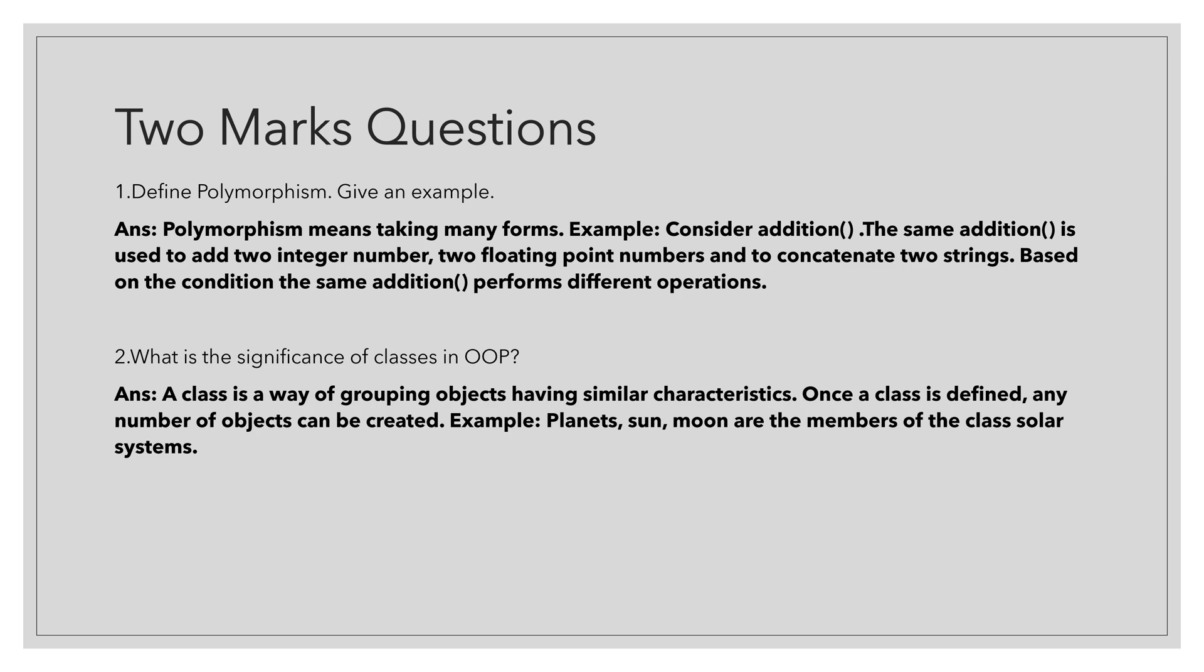The first question is, define polymorphism, give an example. Polymorphism means taking many forms. Consider an example addition. The addition operation is used to add two integer numbers, two floating point numbers, as well as to concatenate two strings. Based on the condition, the same operation is going to perform different operations. That is called as polymorphism.